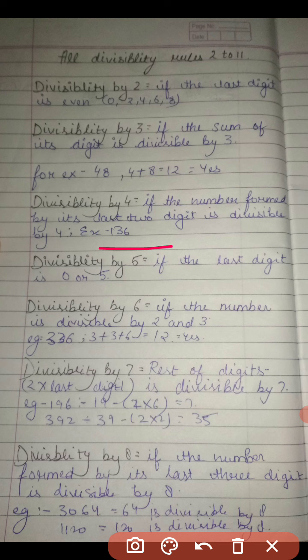4 ones are 4, 4 twos are 8, 4 threes are 12, 4 fours are 16, 4 fives are 20, 4 sixes are 24, 4 sevens are 28, 4 eights are 32, 4 nines are 36. So in the table of 4, 36 comes on the 9th place.